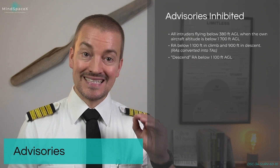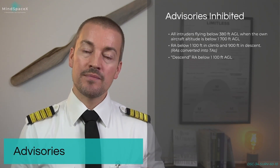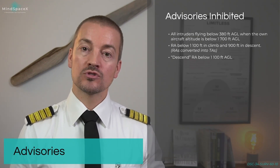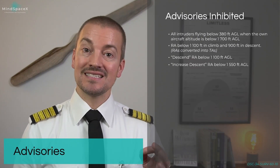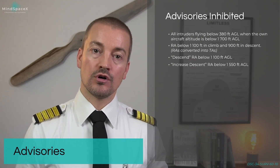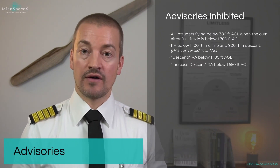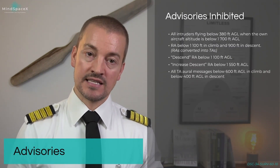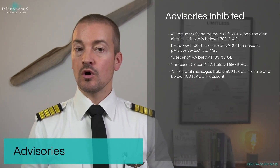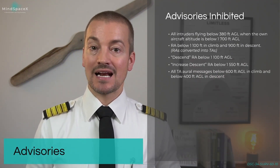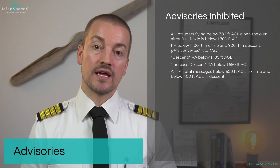The vertical command descent given when an RA triggers is inhibited below 1,100 feet AGL, as is the increased descent vertical command if the RA is below 1,550 feet AGL. All TA messages below 600 feet AGL when climbing and 400 feet AGL when descending are also inhibited.